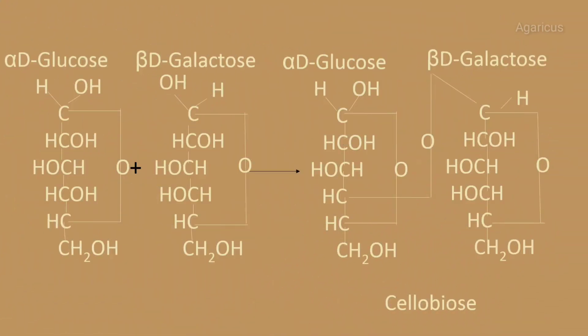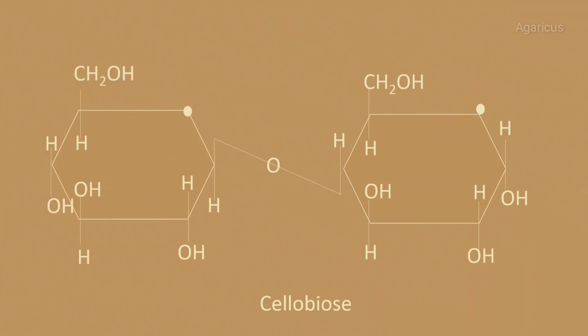Alpha D-glucose and beta D-galactose combine to form cellobiose, and one water molecule is hydrolyzed here. This is the Haworth projection of cellobiose. A one-four linkage is present here.